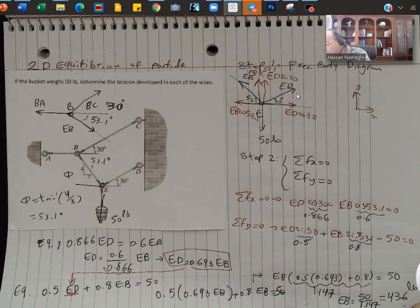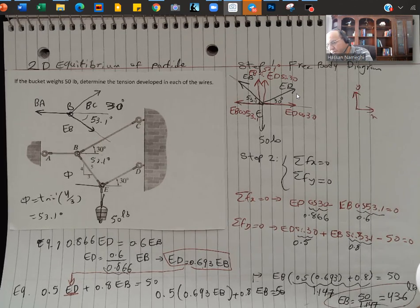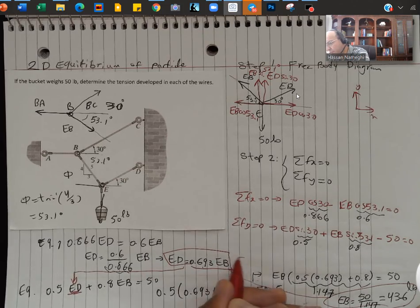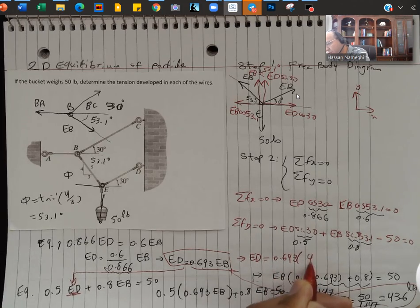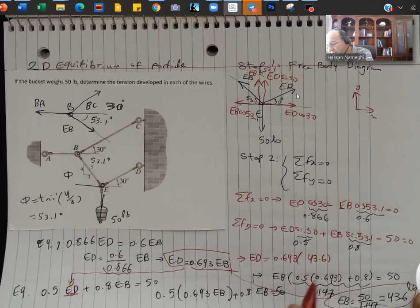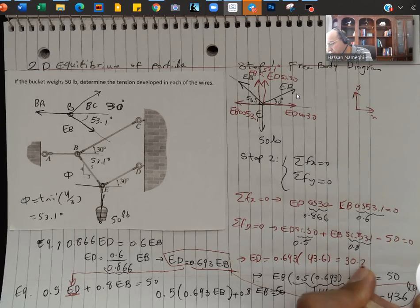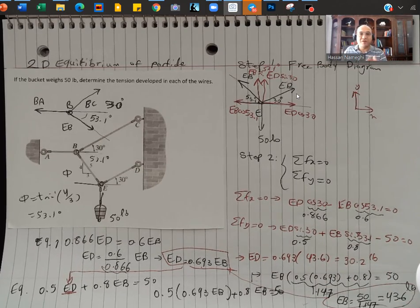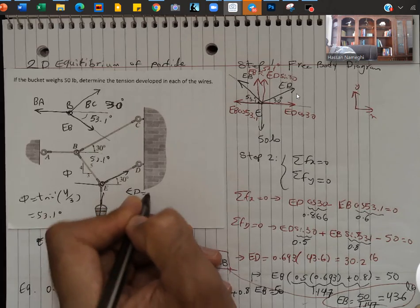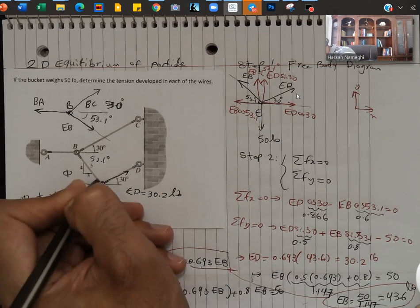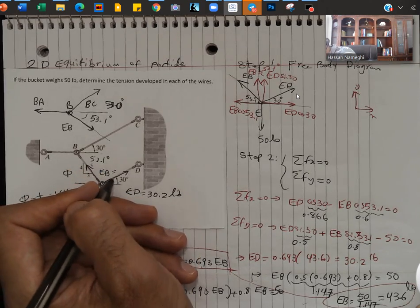So I found EB. In order to find ED, just simply put it in this equation. I'm going to get ED equal to 0.693 into 43.6, and the answer for this is 30.2 pounds. So we are already done. We found two forces. Those two forces that we found: ED ended up at 30.2 pounds and I found EB at 43.6.